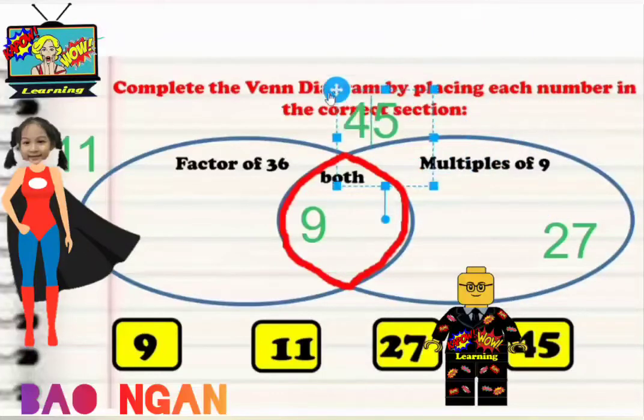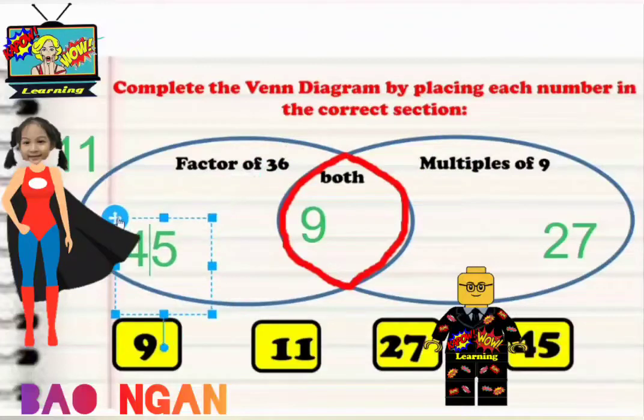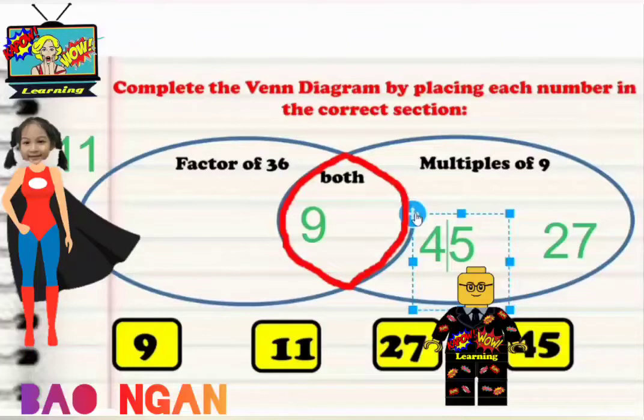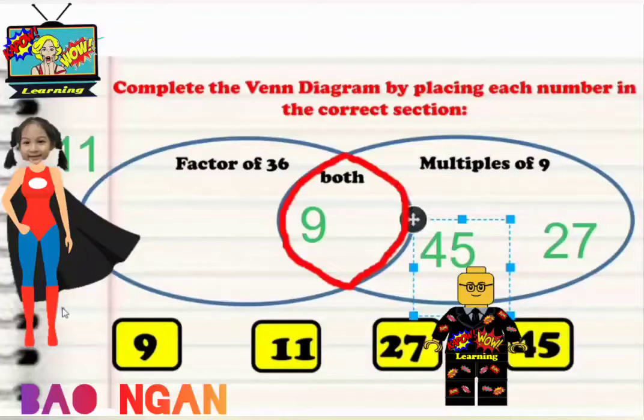45, is it a factor of 36? No. Is it a multiple of 9? Yes. Yeah, because 5 times 9 is 45. So that is how you do it.